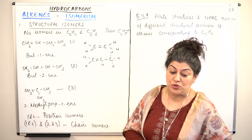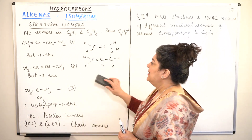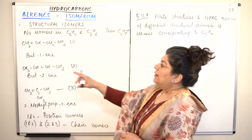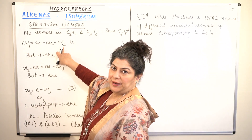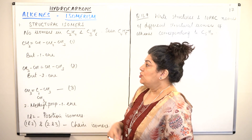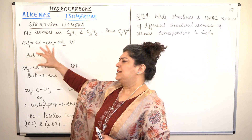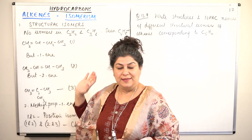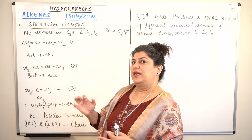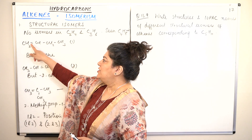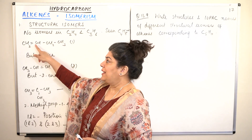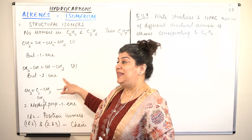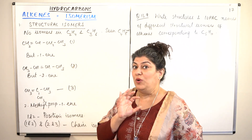The first member that shows isomerism is butene. In a straight chain with the double bond on the first carbon, we call it but-1-ene. The other arrangement is that the double bond, instead of being between the first two carbon atoms, can be between the second and the third — giving but-2-ene, which has a different name.